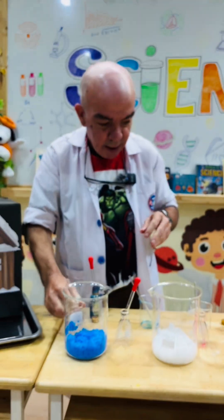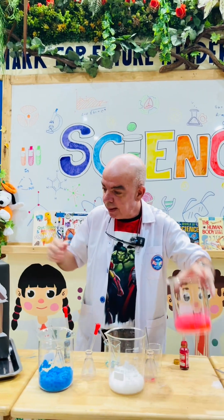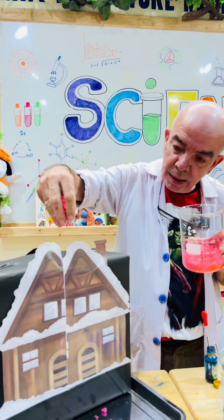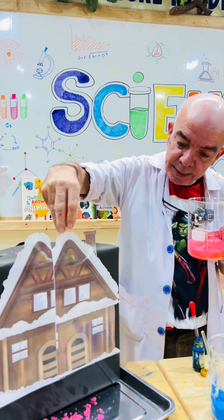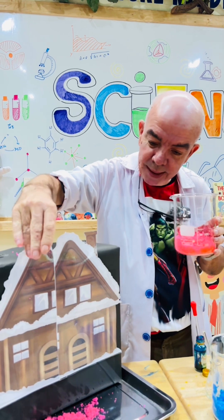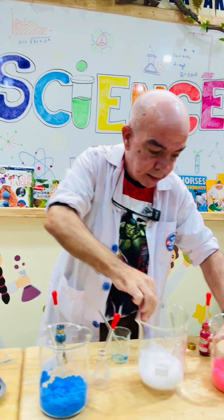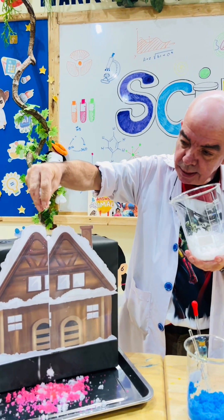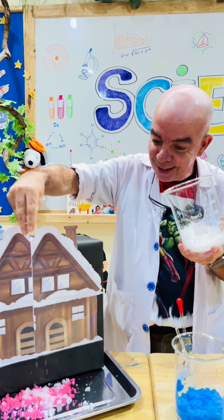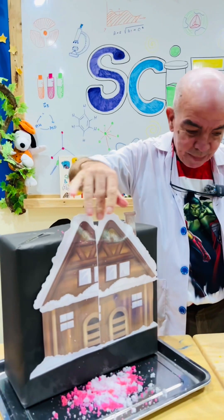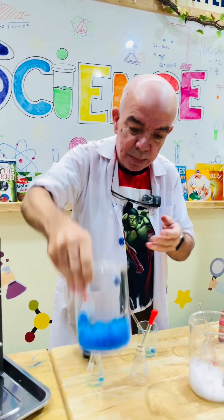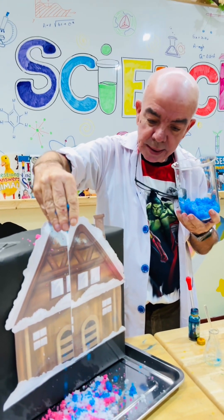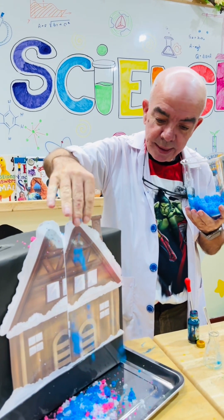Okay, so now we're going to decorate our wood cabin here with colorful snow. There's the red, now the white — looks like it's snowing — and the last one is the blue. Nice red, white, and blue!